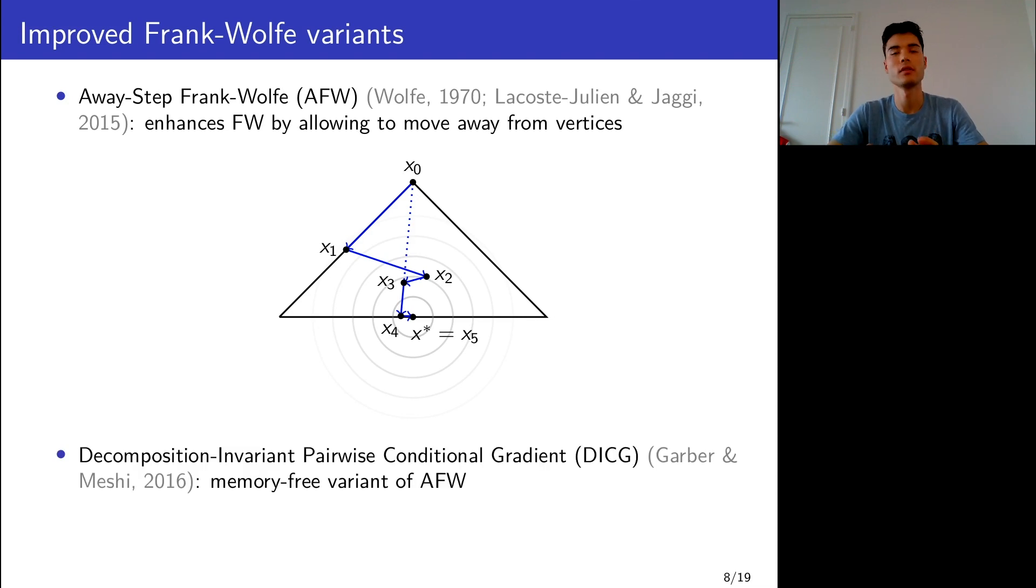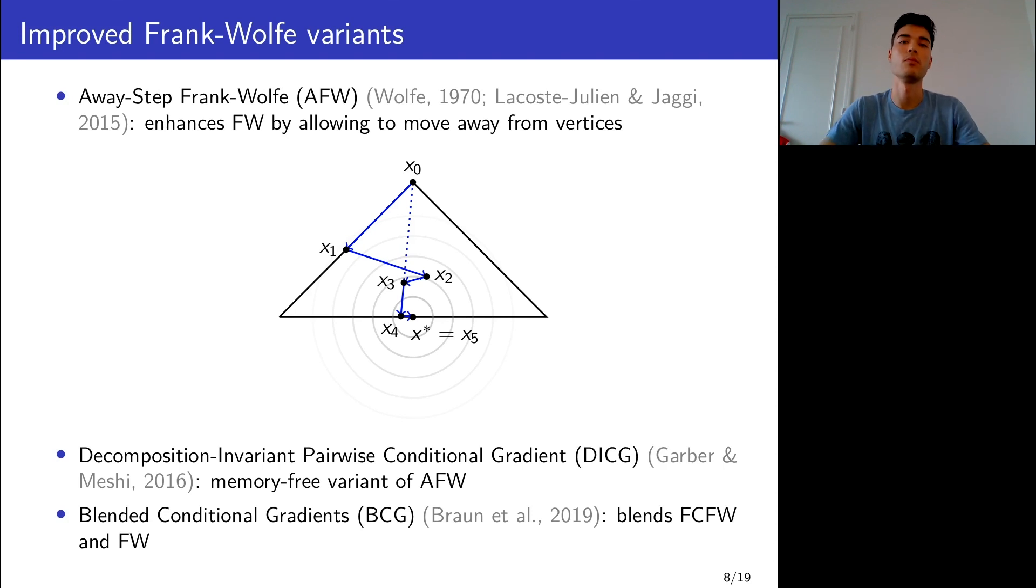DICG is a variant that is memory-free. More precisely, it's a variant of the pairwise Frank-Wolfe algorithm, but the idea is the same, and it works very well in practice. Another variant that works very well in practice is BCG, the blended conditional gradient algorithm, which is basically an efficient variant of the fully corrective Frank-Wolfe algorithm, the fully corrective Frank-Wolfe algorithm being much too expensive to be used in practice.